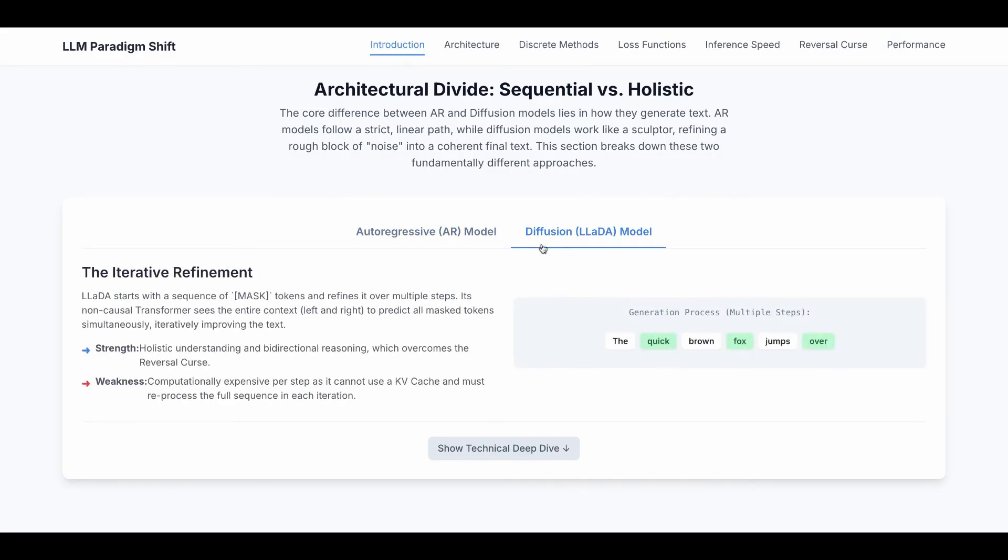On the other hand, diffusion models, LADA is only one of them, it starts with a sequence of mask tokens like this and then it refines the mask tokens over multiple steps. Its non-causal transformer sees the entire context from left and right to predict all the mask tokens simultaneously.